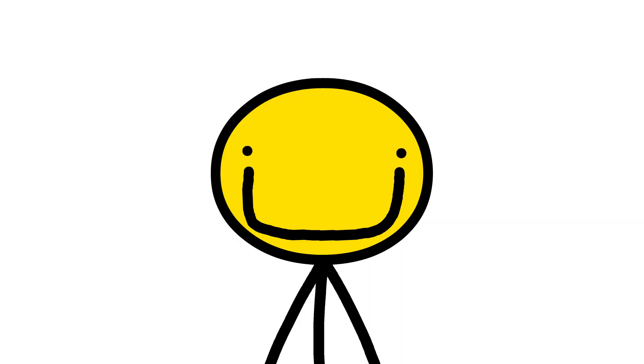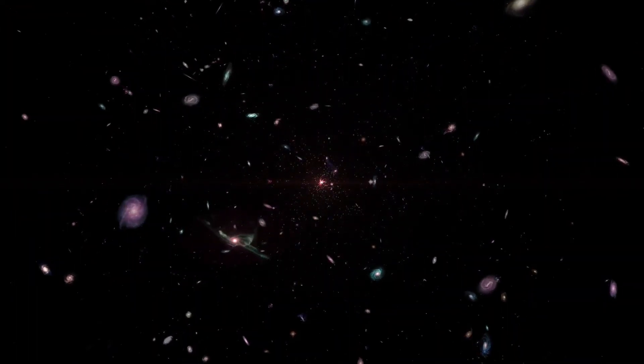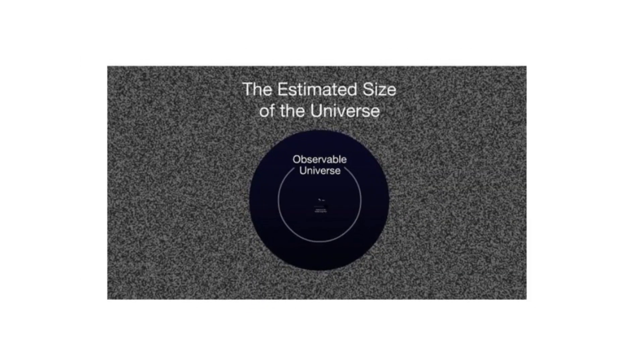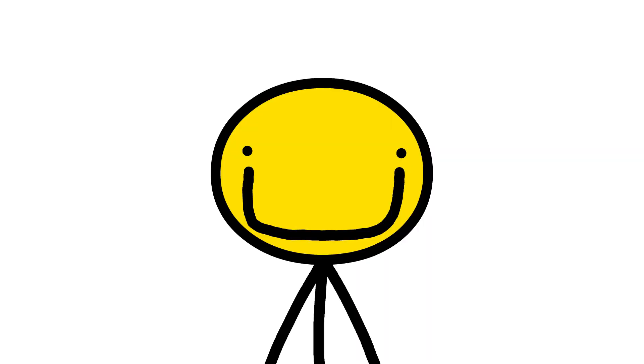And that's just our galaxy. There are between 100 to 200 billion galaxies in the observable universe. If we count the ones in the unobservable one, it goes up to the trillions. So where the fuck is everybody?